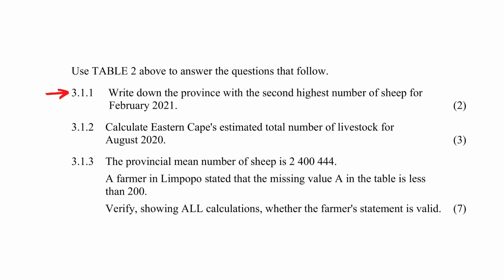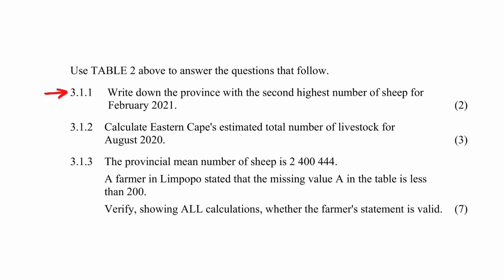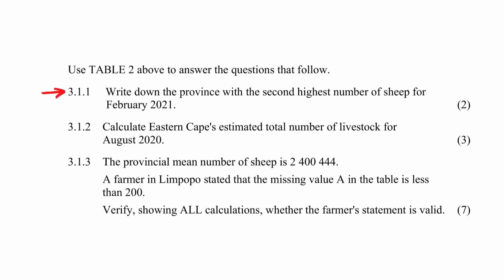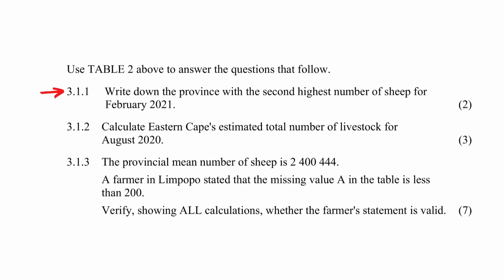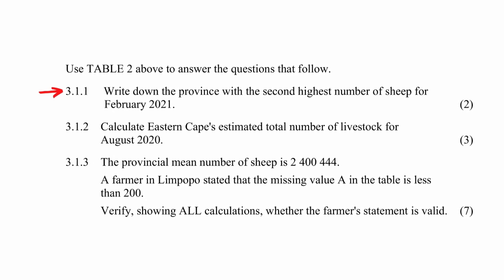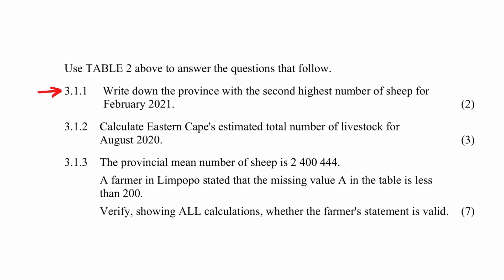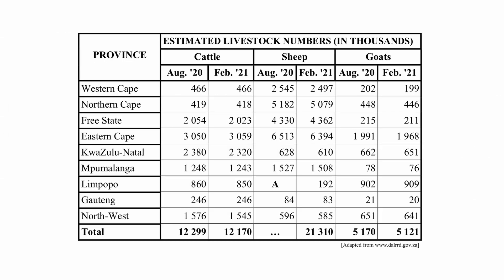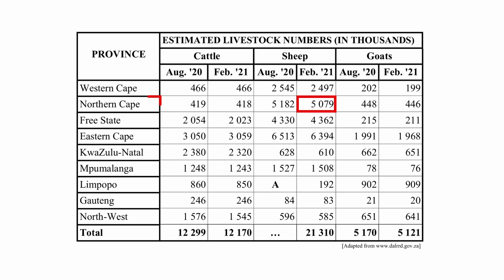In question 3.1.1, you are instructed to write down the province with the second highest number of sheep in February 2021. The province with the second highest number of sheep in 2021 is the Northern Cape.